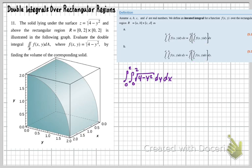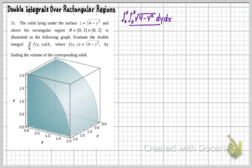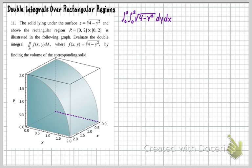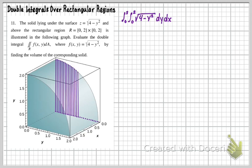Now let's talk about what this looks like geometrically. If we're doing dy first, that means we're starting at the origin and coming out from that origin in the y direction. We're dealing with this height — the square root of 4 minus y squared — projected up from points on the y axis and extended in the y direction. We create that area with that height, and then project it forward to cover the whole volume.